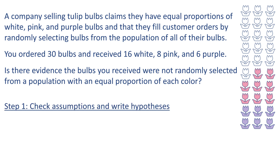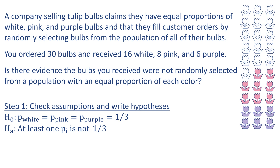Step 1: check assumptions and write hypotheses. When conducting a chi-square goodness of fit test, it makes the most sense to write the hypotheses first because the hypothesized values are needed to check the assumption. In this example, the tulip company is claiming that the proportions for white, pink, and purple are all equal. Our null hypothesis is that the three population proportions are equal — since there are three categories, they are all equal to one-third. Our alternative hypothesis is that at least one p sub i is not one-third.